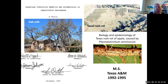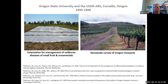After getting my master's I wasn't ready for a PhD, so I decided to work for a bit. I worked at Oregon State University and the USDA on several projects involving soil-borne diseases. This was right when there was funding for the phase-out of methyl bromide in the 1990s, so I worked on alternative methods for managing soil-borne diseases, including solarization — looking at heating the soil in Oregon where temperatures are cooler. I also learned a lot about nematodes and did nematode surveys in Oregon vineyards.